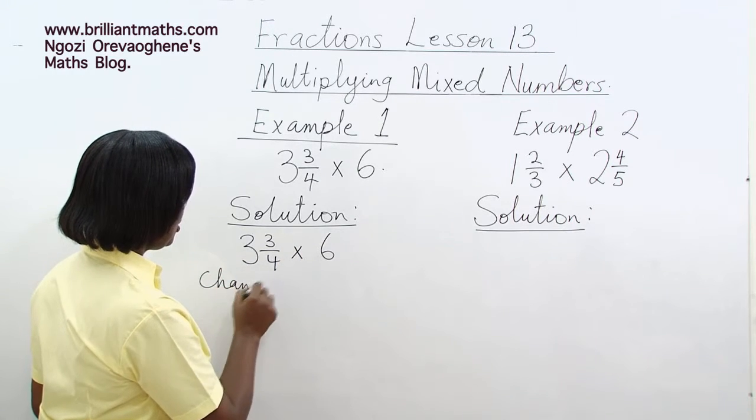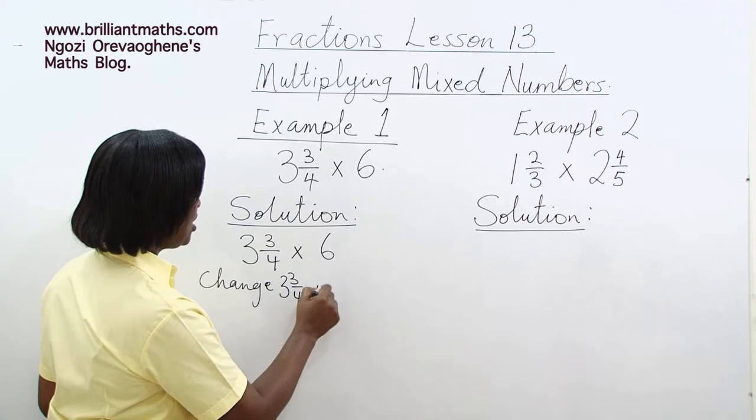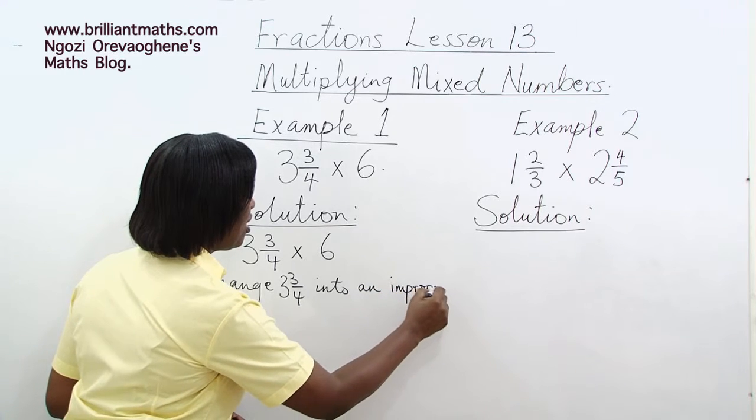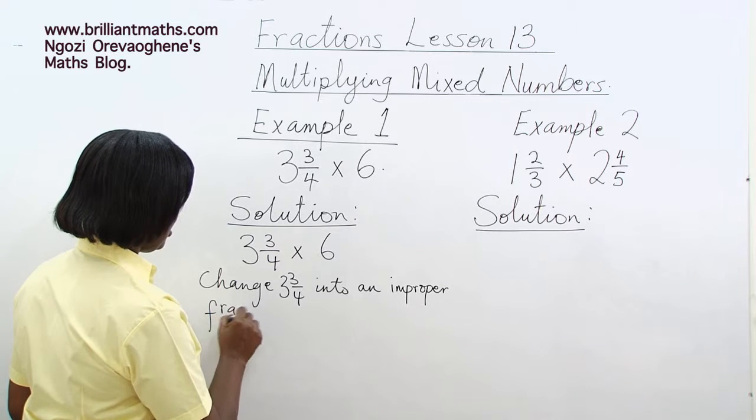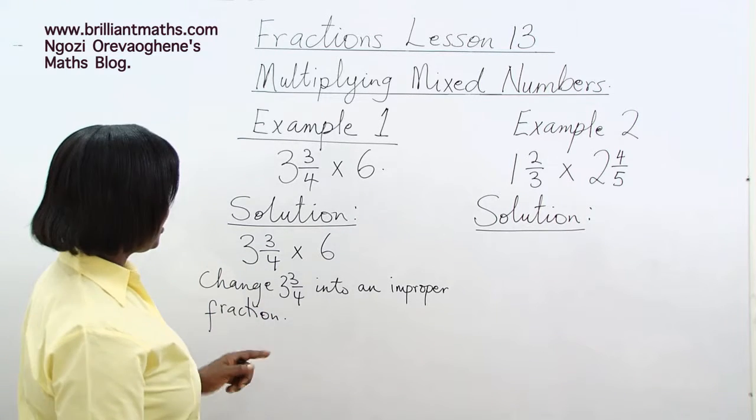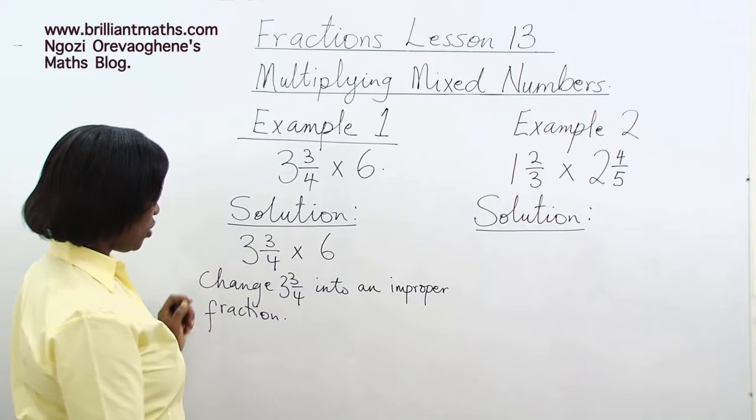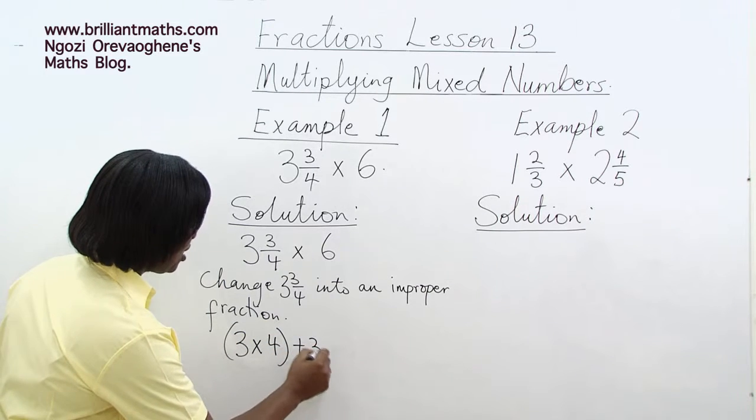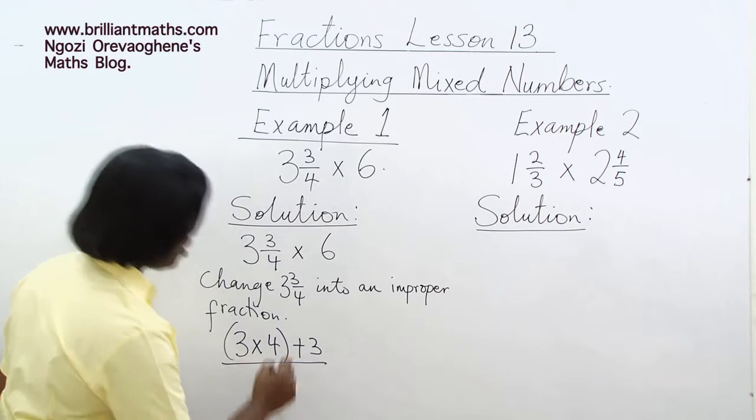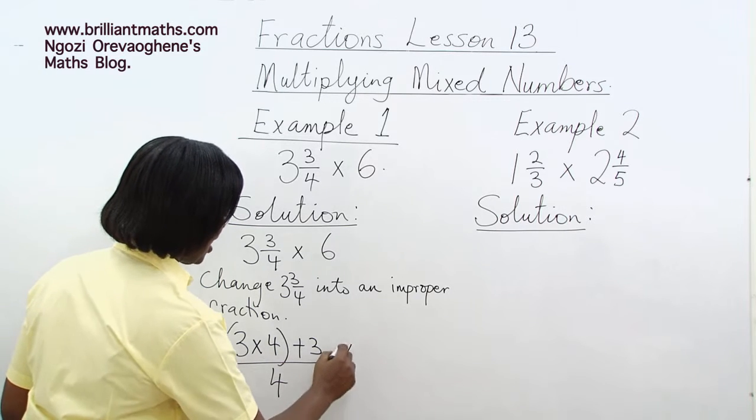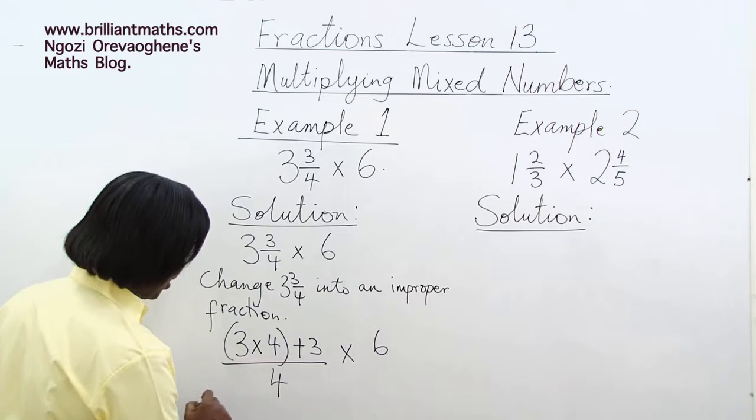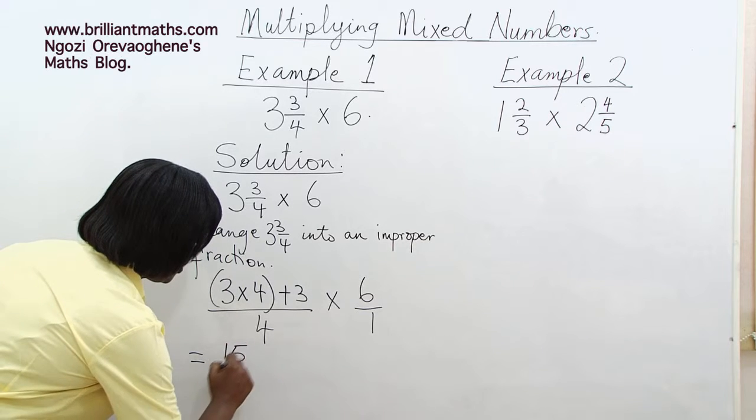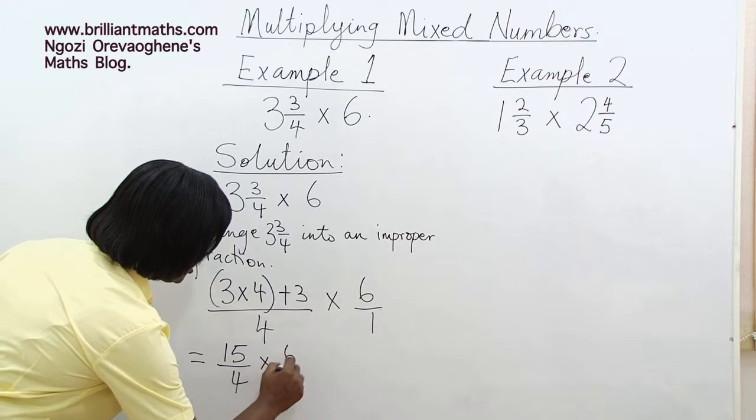Change 3 3 quarters into an improper fraction. That will give us 3 times 4 is 12, plus 3, all over 4, times 6. And that will give us 15 over 4 times 6 over 1.